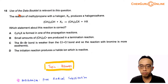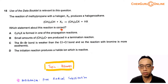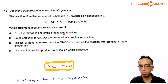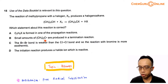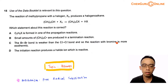Question 15 — use of the data booklet is relevant to this question. The reaction of methylpropane with a halogen X2 produces a halogenoalkane. Which statement about this reaction is correct? Option A: C4H9X is formed in one of the propagation reactions. Option B: small amounts of CH3(3)C• (a carbon radical) are produced in a termination reaction. Option C: the bromine-bromine bond is weaker than the chlorine-chlorine bond, and so the reaction with bromine is more exothermic. Option D: the initiation reaction produces a halide ion, which is reactive.